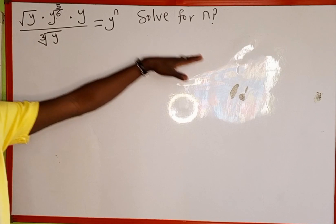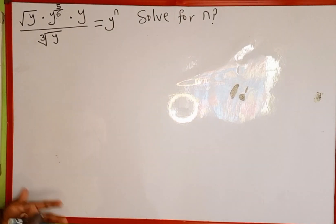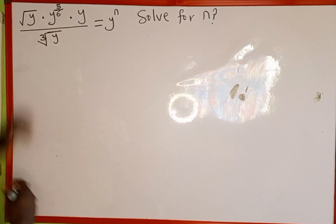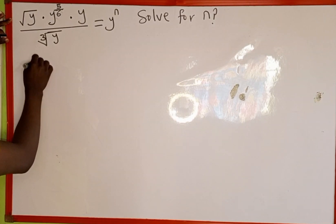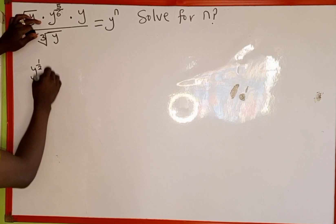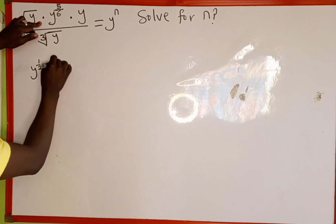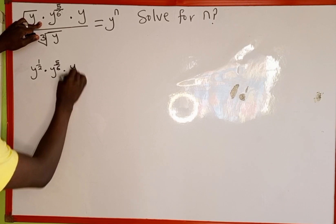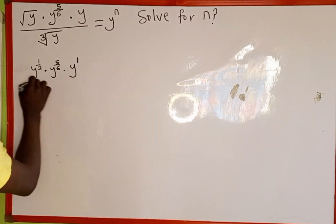We are asked to solve for the value of n in this radical equation. To solve for the value of n, the first thing we are going to do — this square root of y can also be written as y to the power of 1 over 2, then multiplied by y to the power of 5 over 6, then multiplied by y. And y is the same as y to the power of 1.